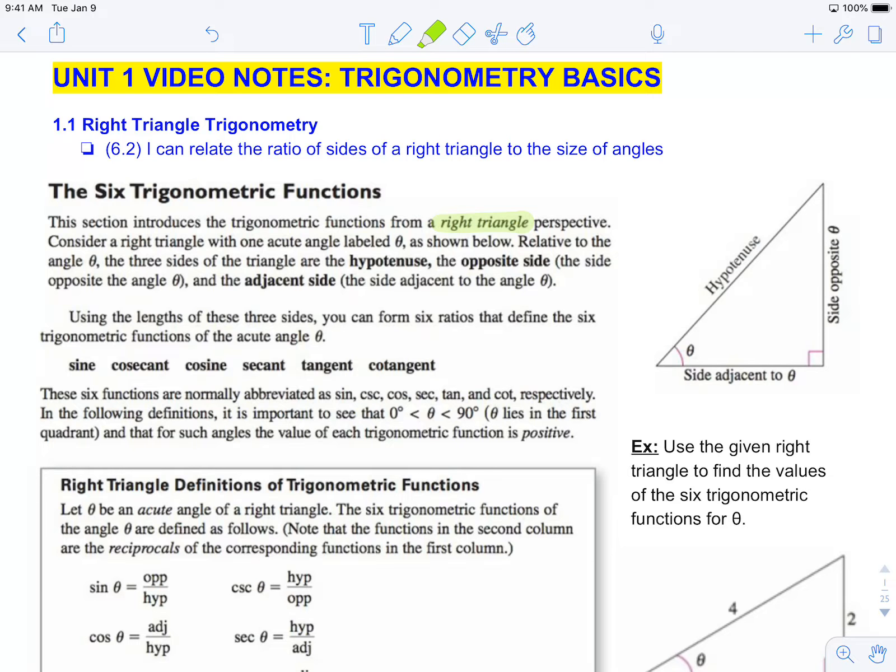So looking at this right triangle on the right, there's an acute angle labeled theta. Relative to that angle, there are three sides: the side adjacent to it, the one that touches it; the side that's opposite to it; and the hypotenuse, which is the longest side opposite from your 90 degree angle.